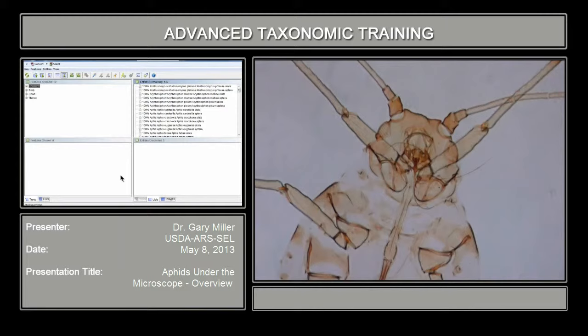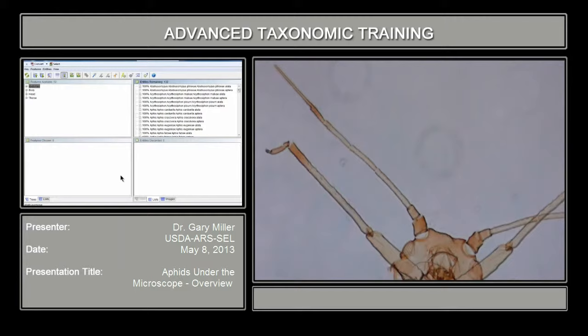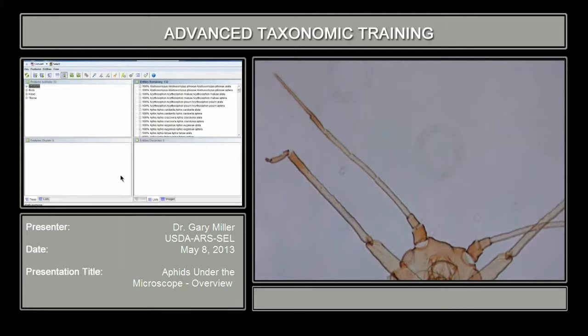Some of the structures you're going to be looking at and concerned with are antennal structures. We're going to start from the head and work down towards the caudal area. With aphid identifications, you'll often see a couplet that will talk about the terminal process, which is the last antennal segment — that's this structure here. You also have the base, which is also part of the last antennal segment.